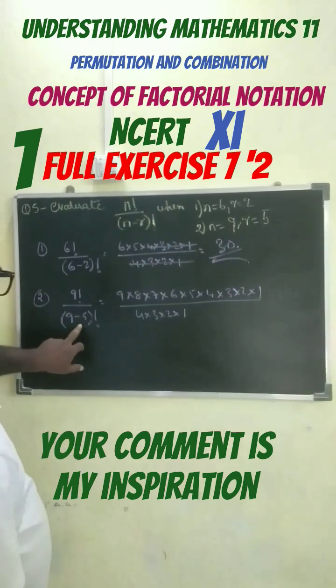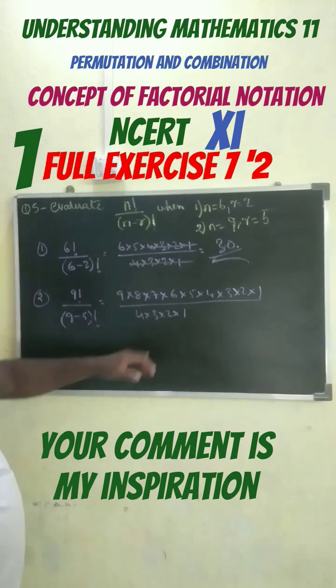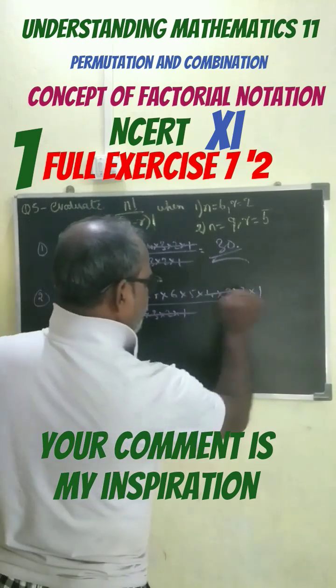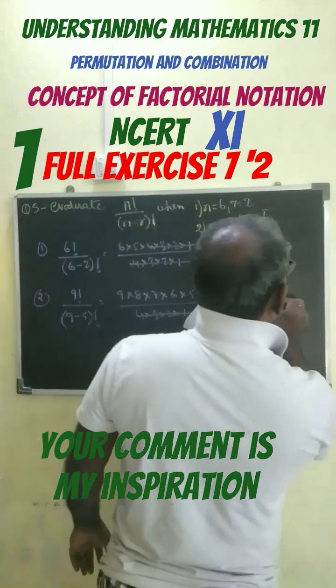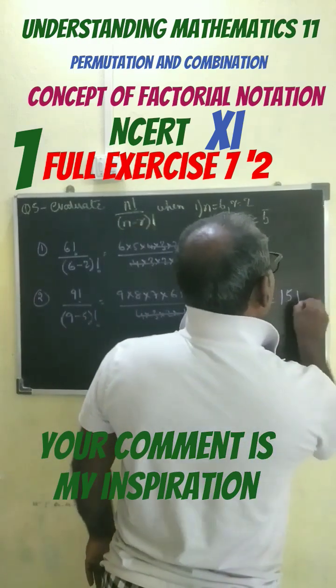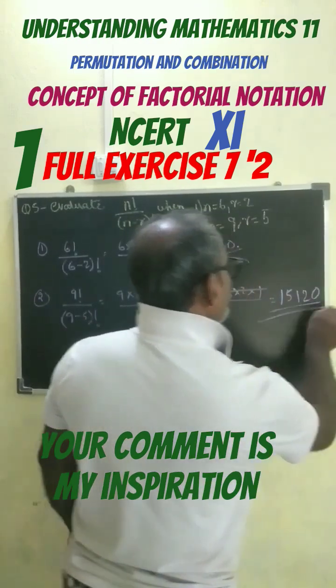For n equals 9 and r equals 5, we get 9 factorial divided by 4 factorial. This gets cancelled with this, and on multiplication we get 15,120 as the answer.